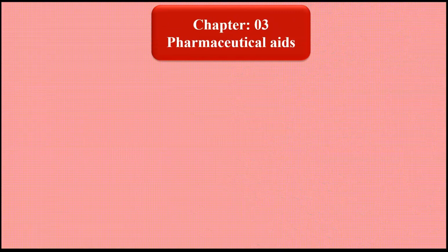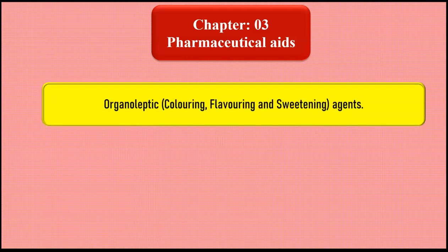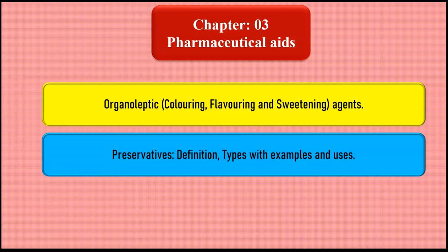Chapter number three is pharmaceutical aids. In this we are going to study the organoleptic agents — that is the coloring, flavoring, and sweetening agents. Then the next point we are going to study is preservatives: definition, types of preservatives with examples, and their uses.